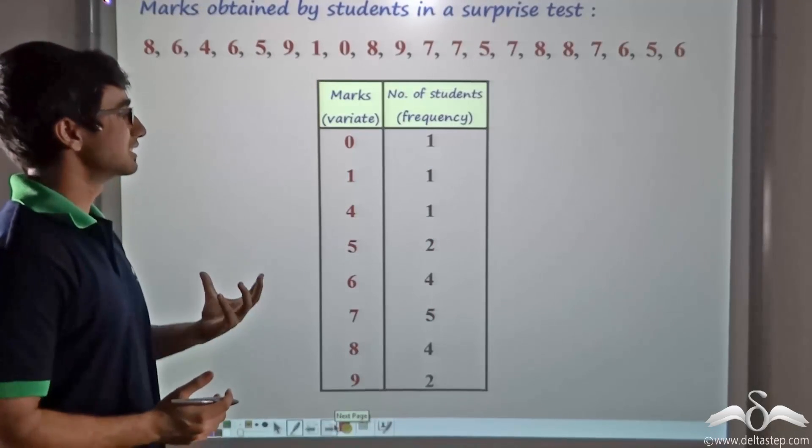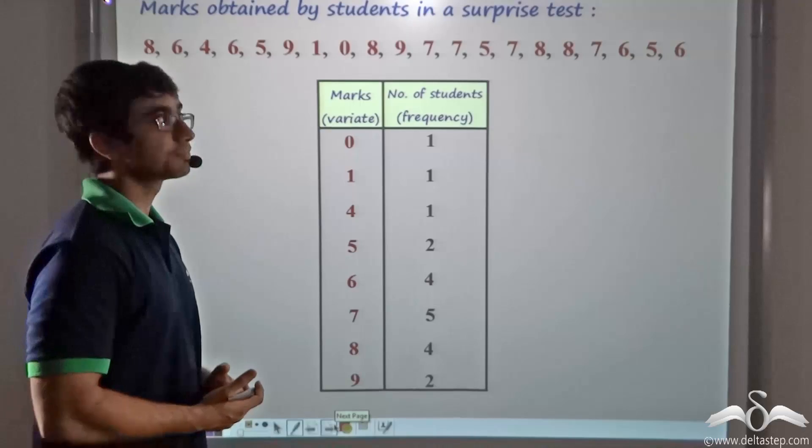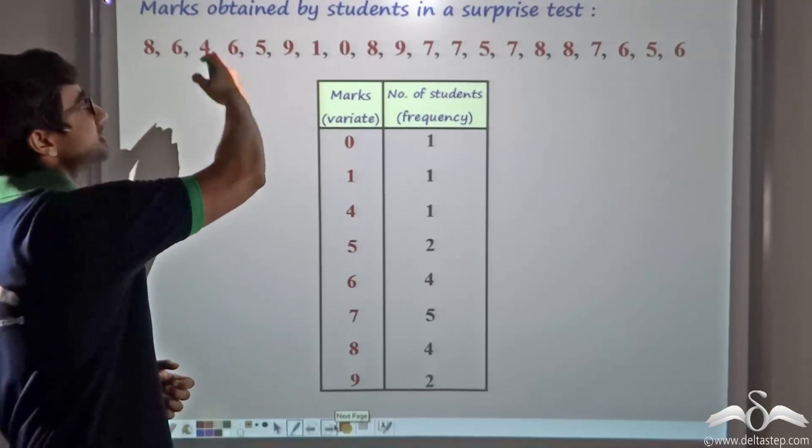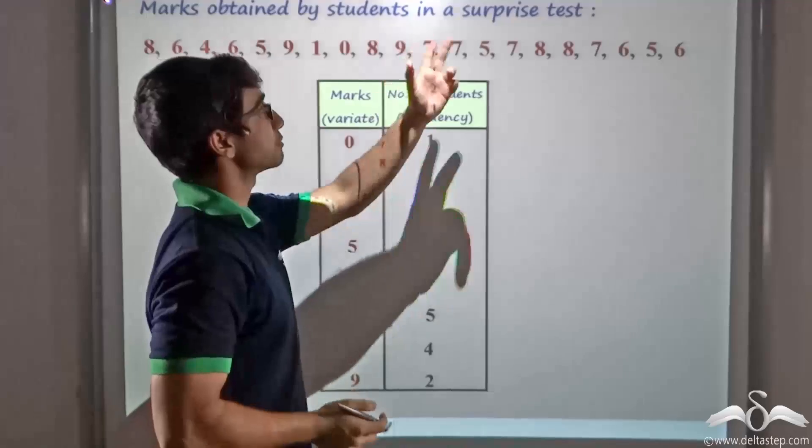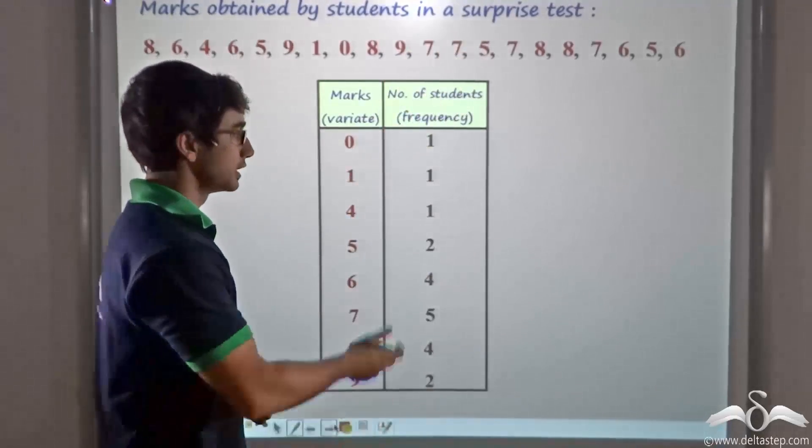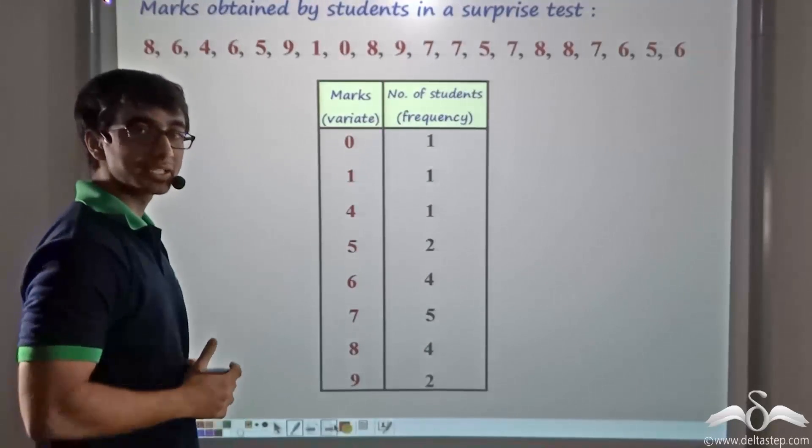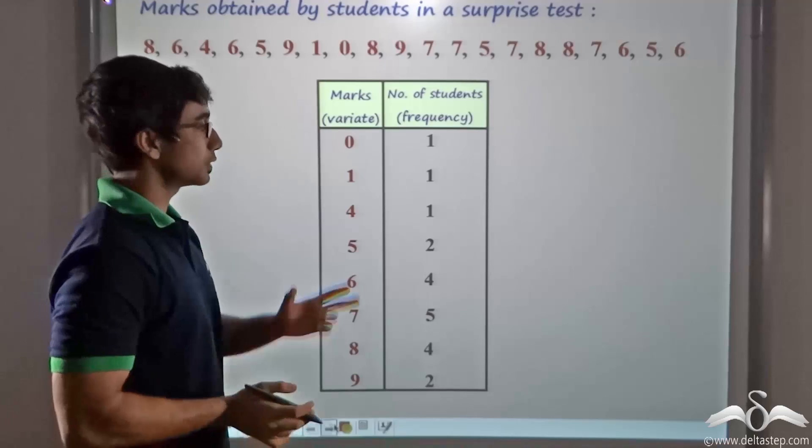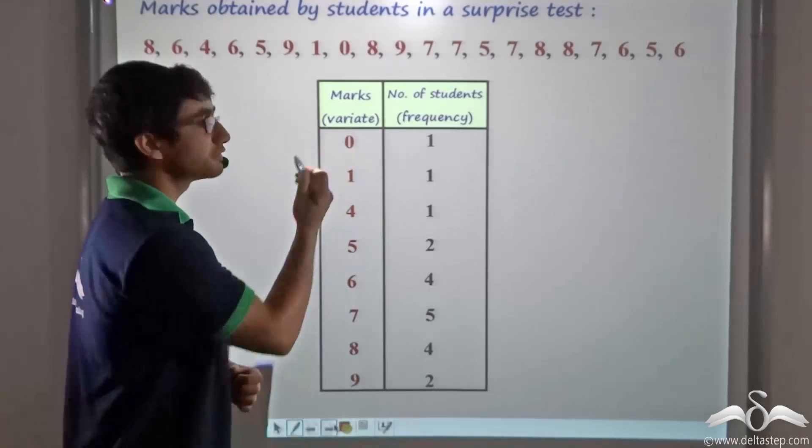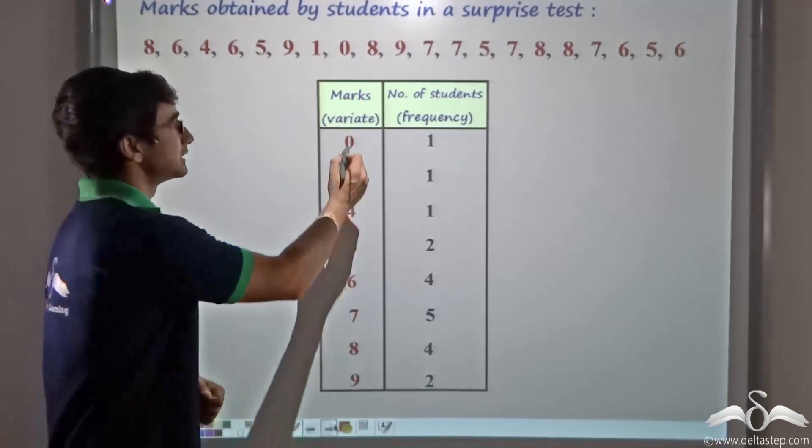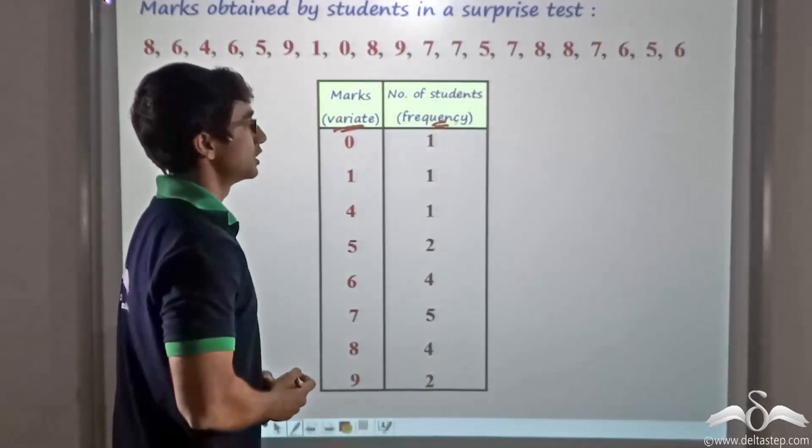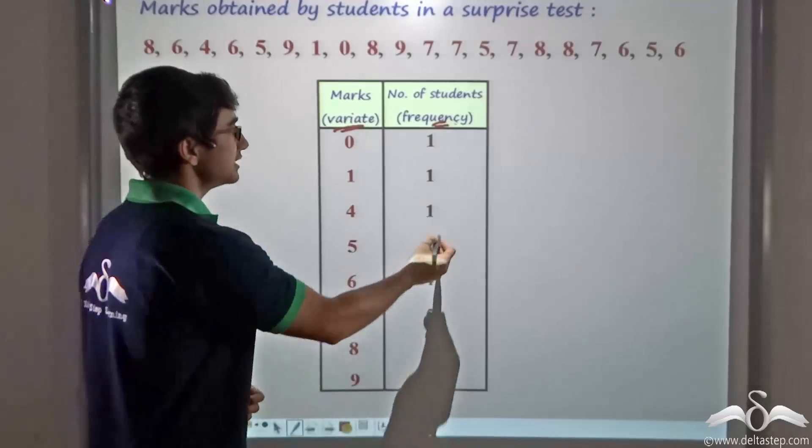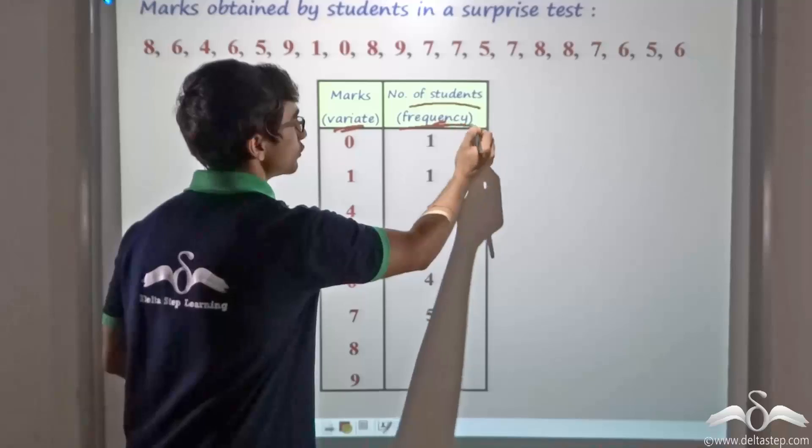Now we are given a simple frequency distribution table. Depending on the same data we had previously seen, where the teacher had conducted a surprise test of twenty students, we have constructed a simple frequency distribution table. As you can see, in a simple frequency distribution table, the variate is written alongside its frequency.